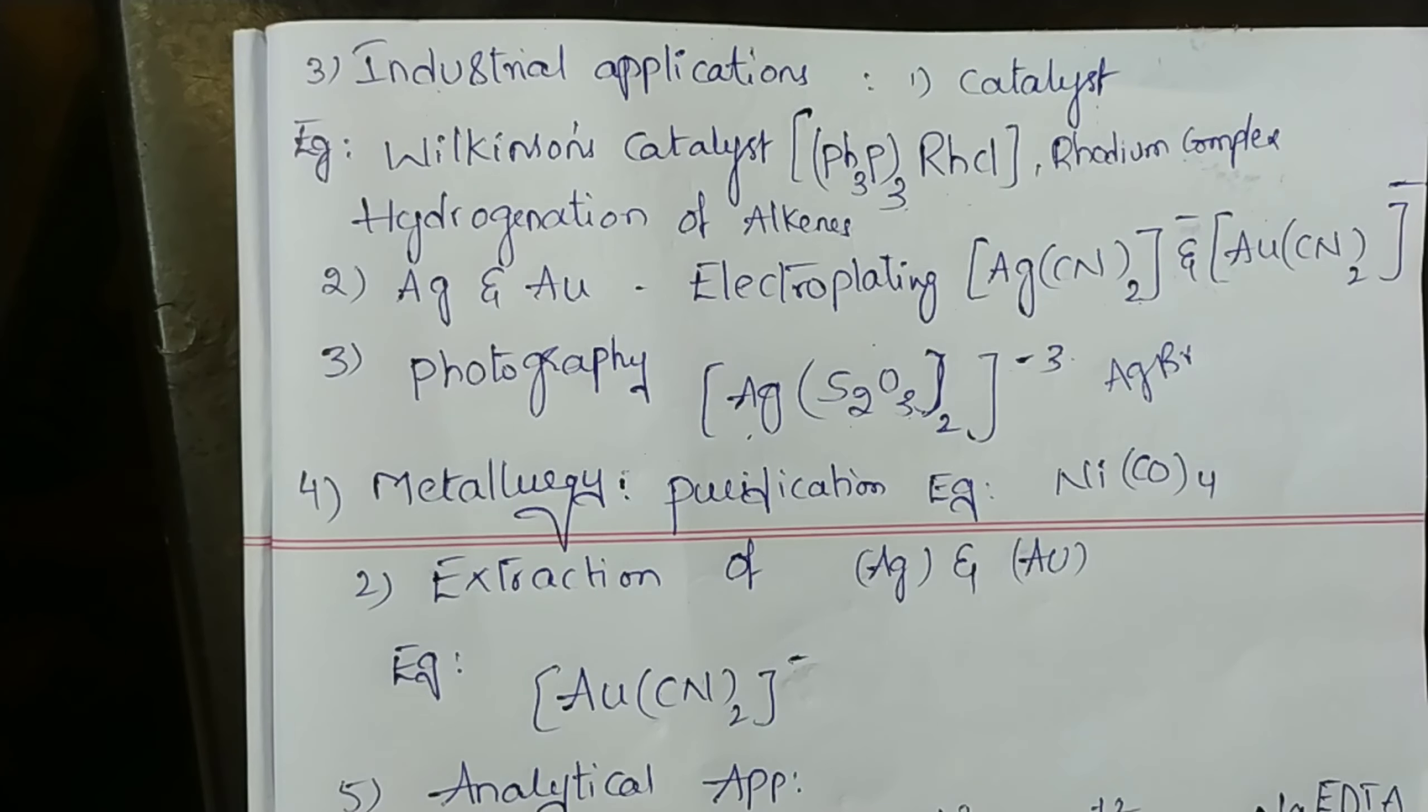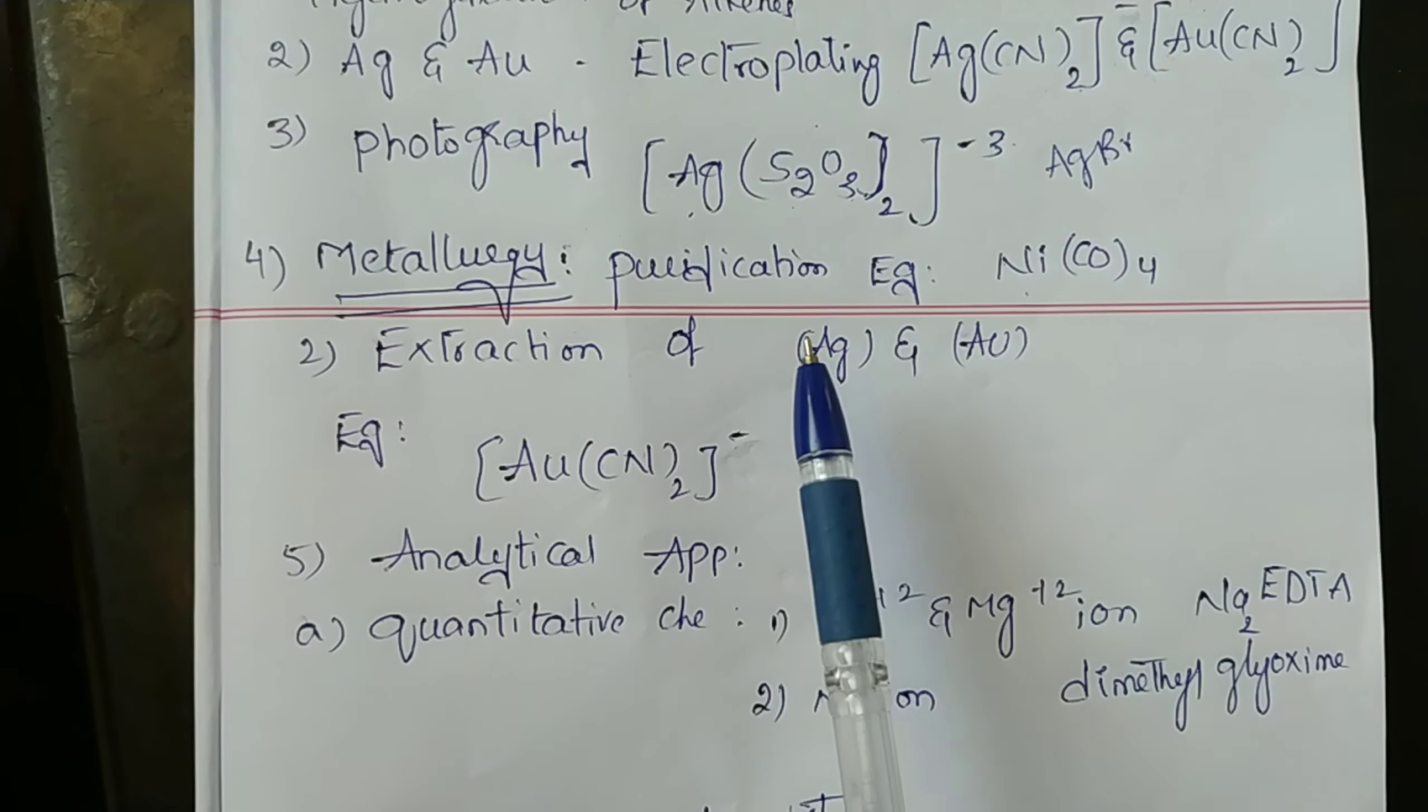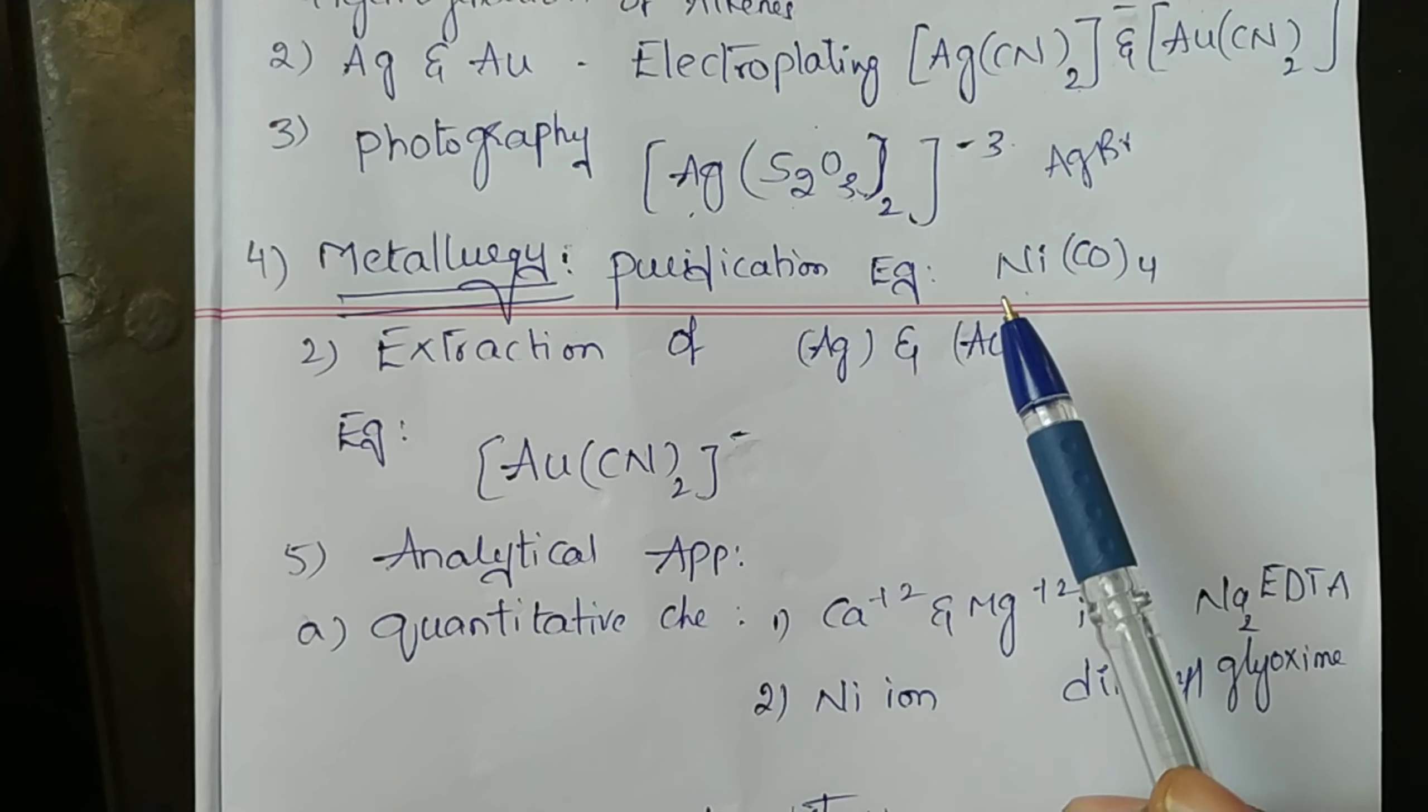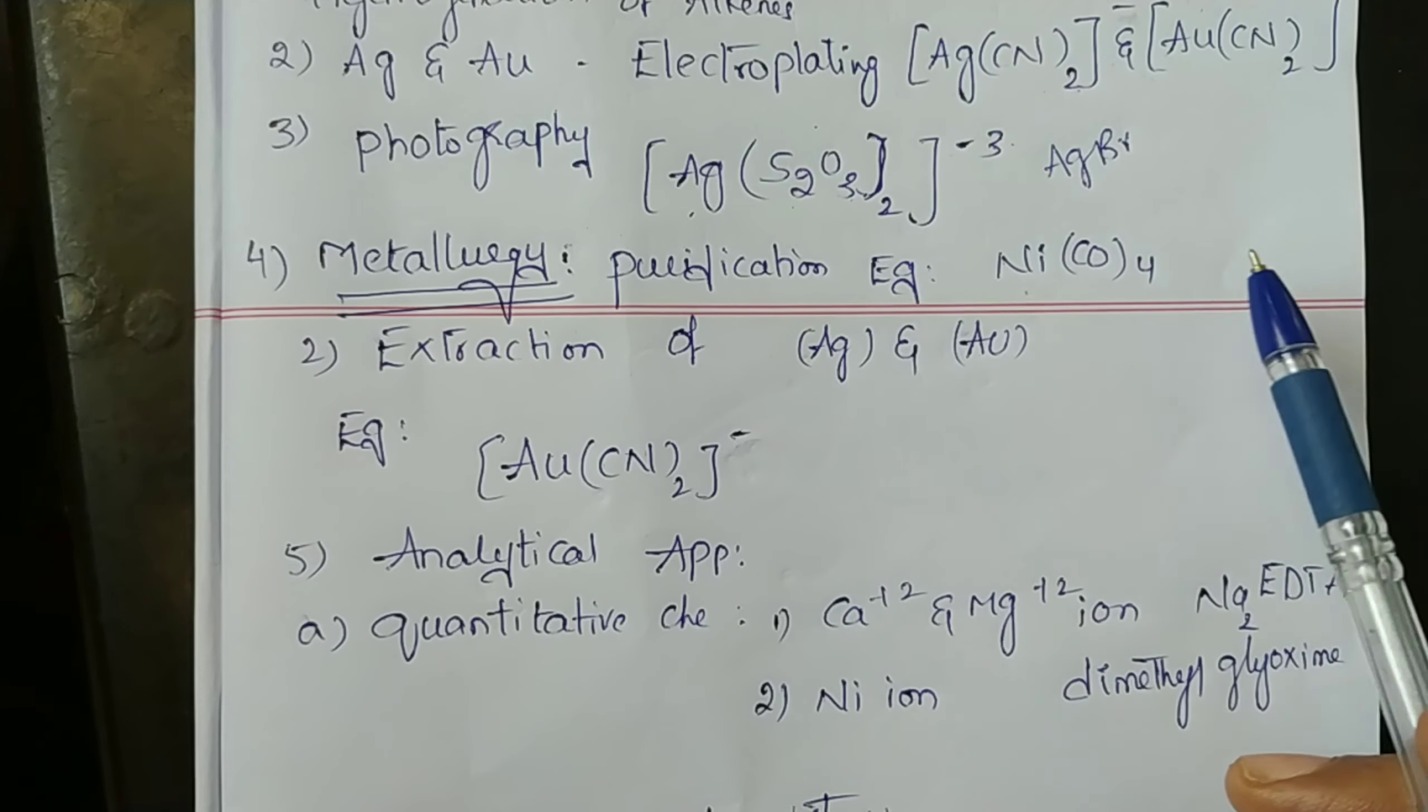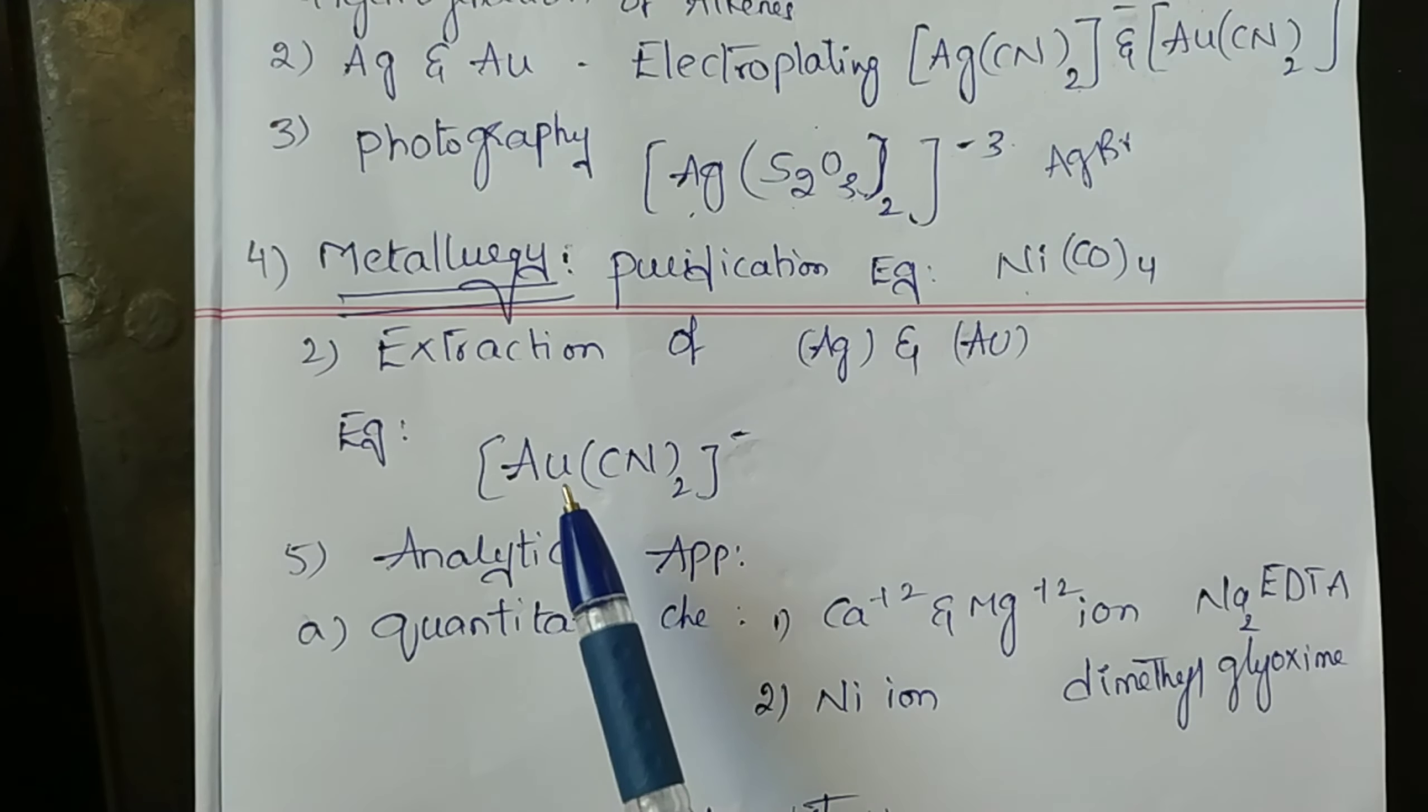In metallurgy, purification of metals: example, impure nickel is converted into Ni(CO)4, which is decomposed to yield pure nickel. Extraction of silver and gold.